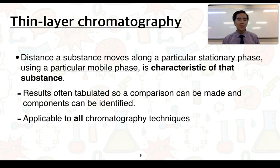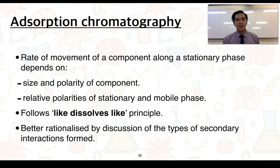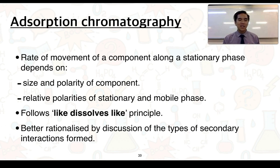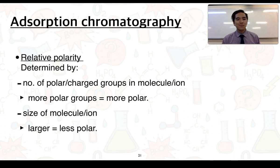The rate of movement of a component along a stationary phase depends on a couple of things: the size and polarity of the components in the mixture, and the relative polarities of the stationary and mobile phases. This rate of movement and the attraction that forms follows the like-dissolves-like principle. To better rationalise this, we discuss the types of secondary interactions that can be formed. Relative polarity is determined by the number of polar or charged groups in a molecule or ion — more polar groups or more charge means greater polarity — and by the size of the molecule or ion: larger molecules generally become less polar.